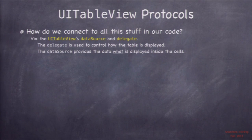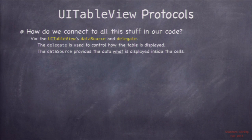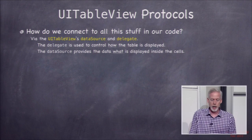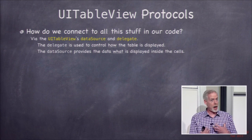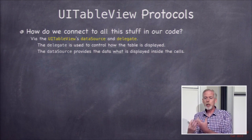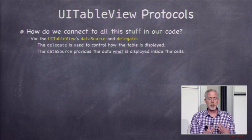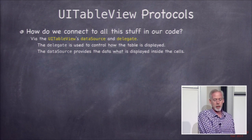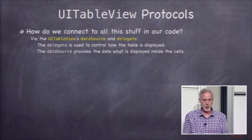Let's talk about the two really important protocols: the data source protocol and the delegate protocol. The data source — UITableViewDataSource — is the contents of the table view, the data coming out of your database into the table. It's basically displaying our model, and the controller implements it to bring the model's data into the view. The delegate, on the other hand, is about how the table is displayed — how we arrange things, what views we use for headers and footers.